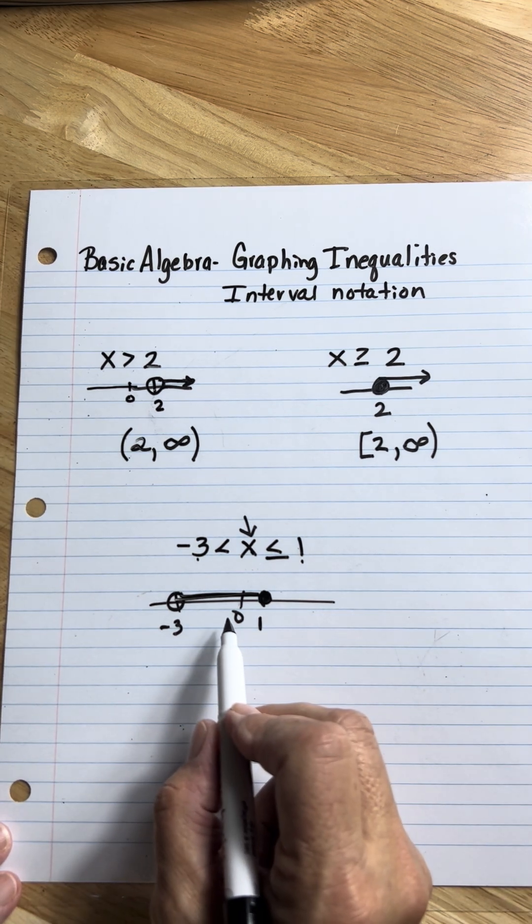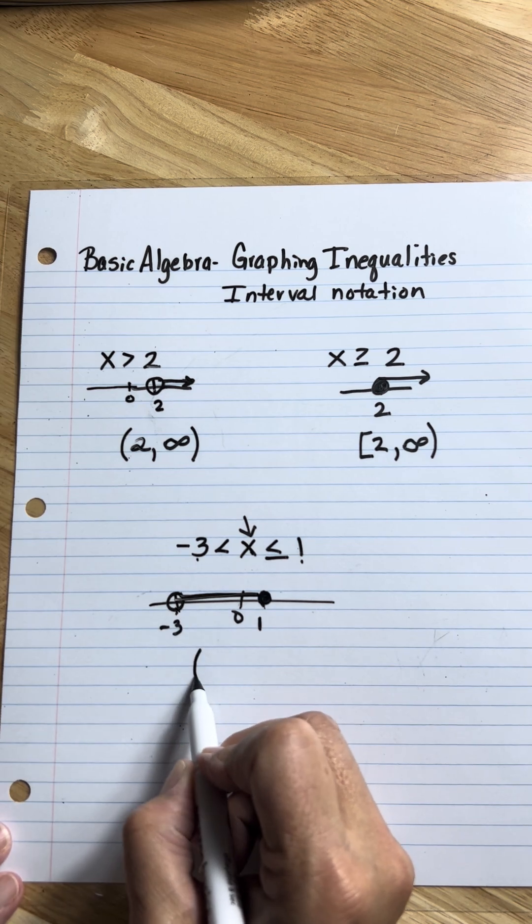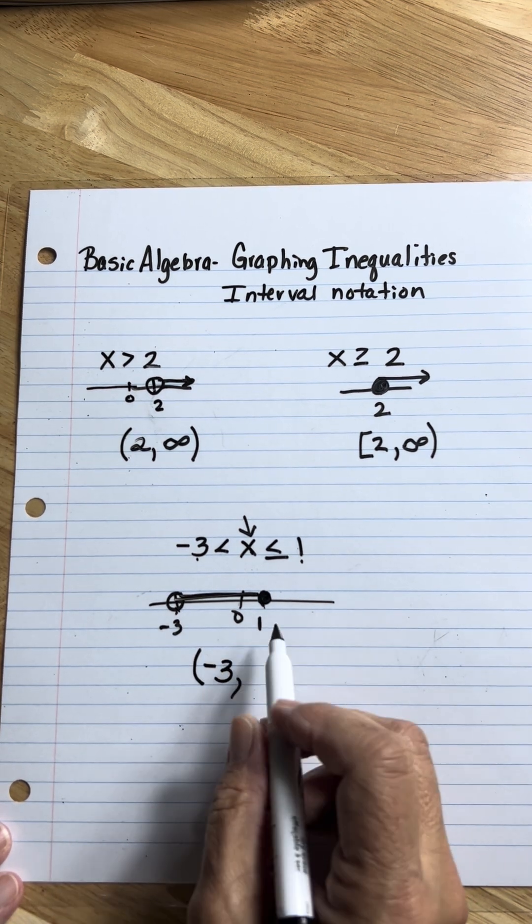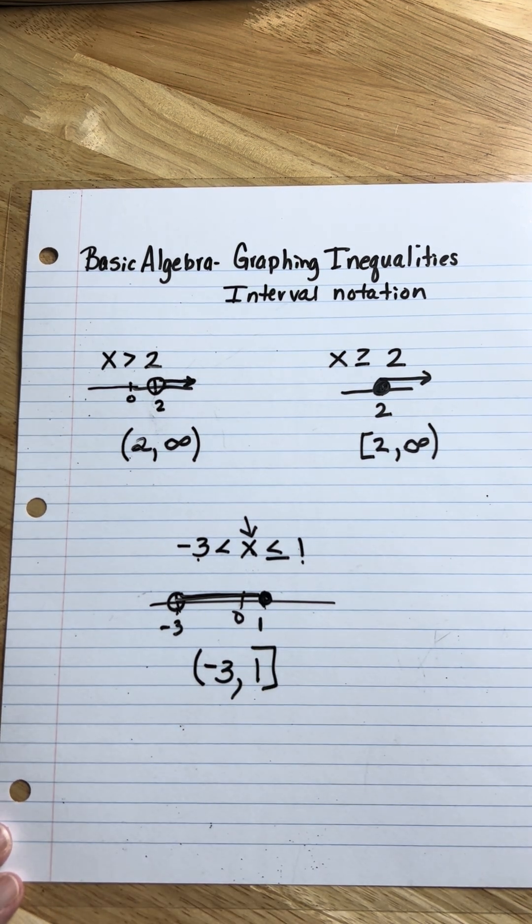Now how to do this in interval notation? Well, look at your endpoints. Here is a three, and since it's an open dot, you're going to use a parentheses, negative three, comma. Here's your one, and since that's a closed dot, you're going to need a bracket there.